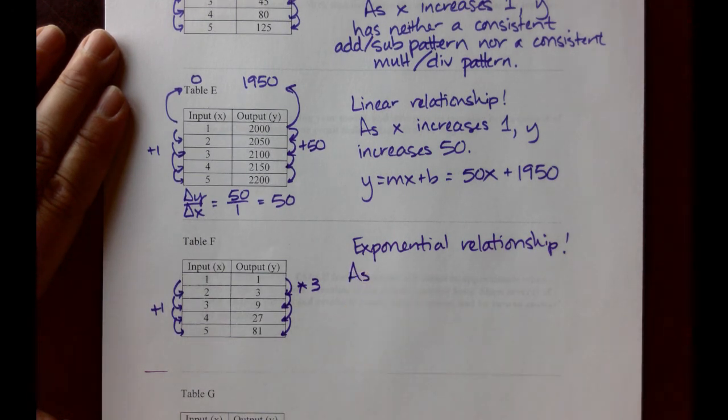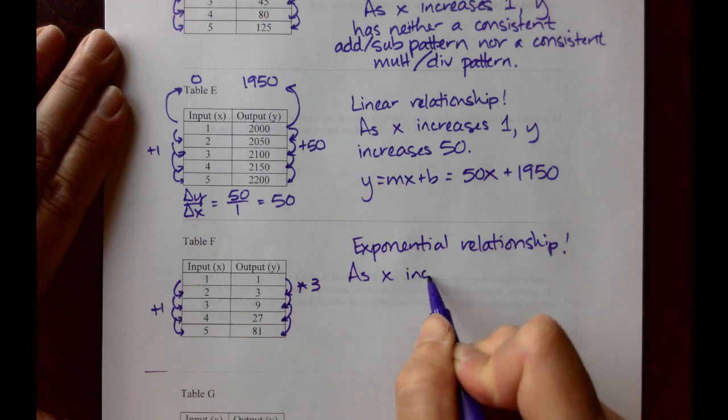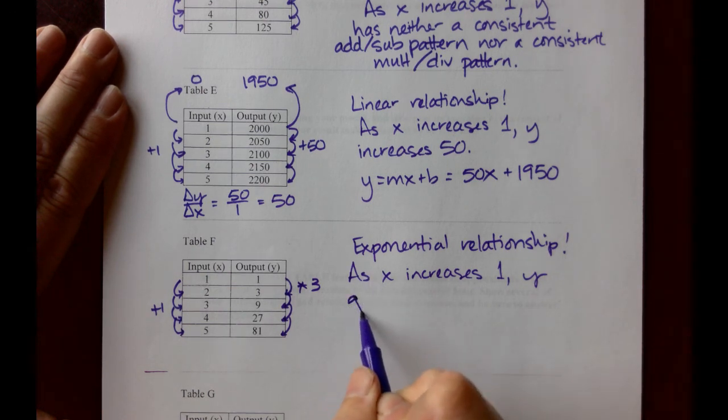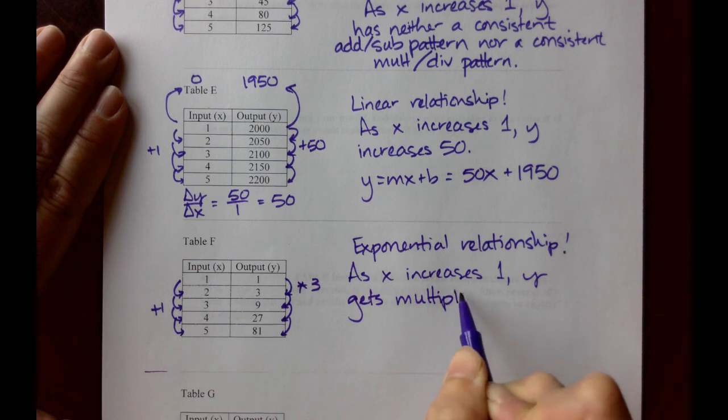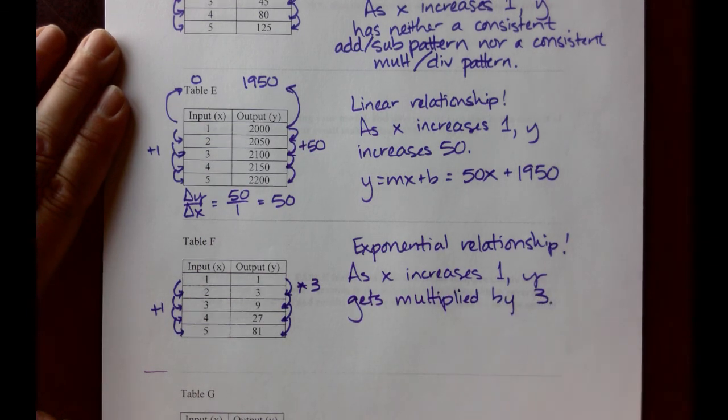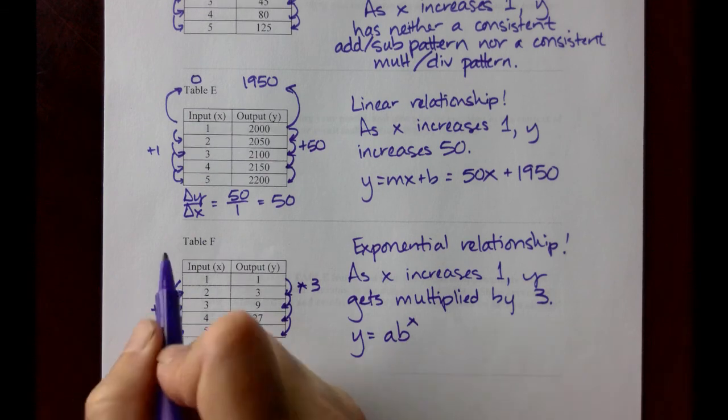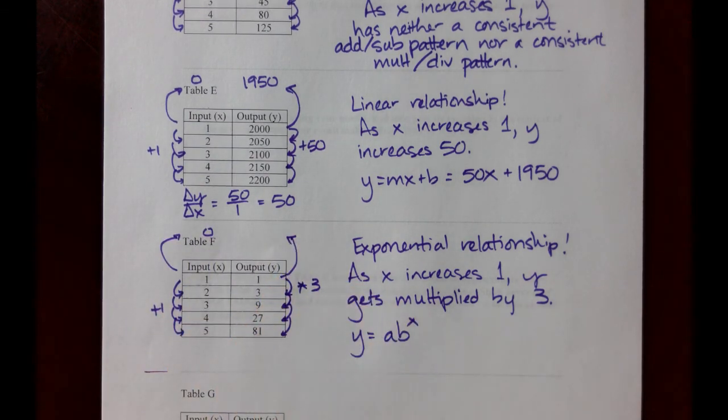The reasoning, you would state something like, as x increases 1, y triples, or gets multiplied by 3. Our equation, y equals ab to the x. We need a y-intercept going backward in the table to when x is 0. Instead of multiplying by 3, when we go backward, we will divide by 3. 1 divided by 3 is 1 third. Our equation should read, y equals 1 third times 3 raised to the x. The 1 third is the y-intercept. The 3 is the action or the tripling. And I think that one is done.